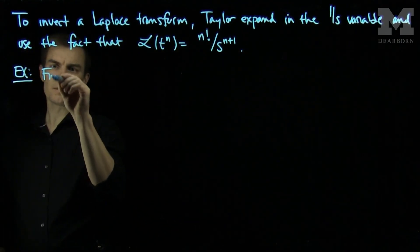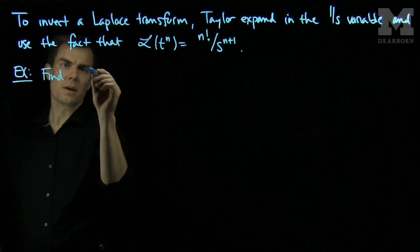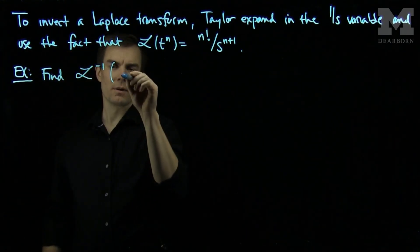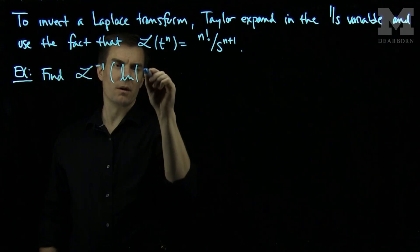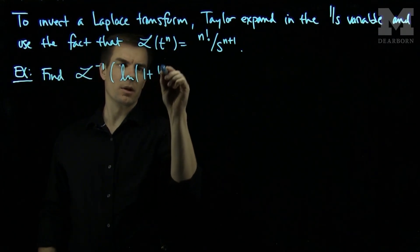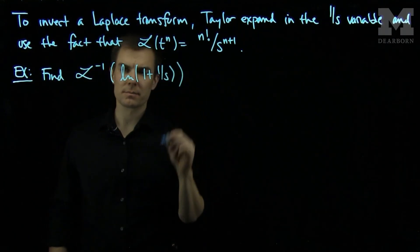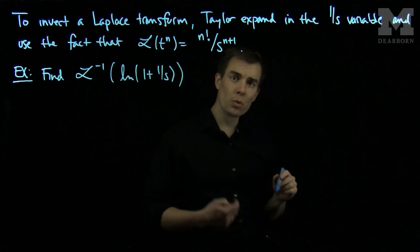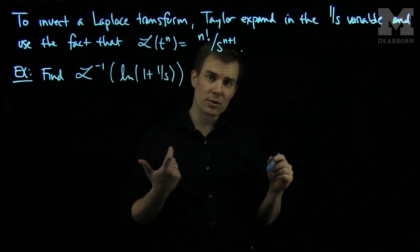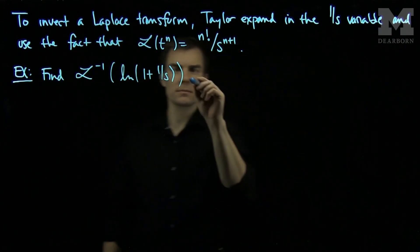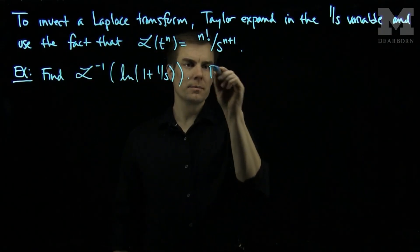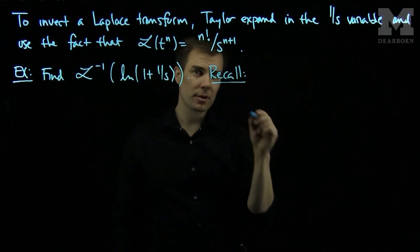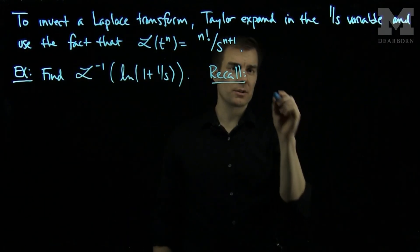Let's find the inverse Laplace transform of the natural log of 1 plus 1 over s. To do this we'll need to use the Taylor expansion for the natural log, so let's recall the geometric sum formula for Taylor series.